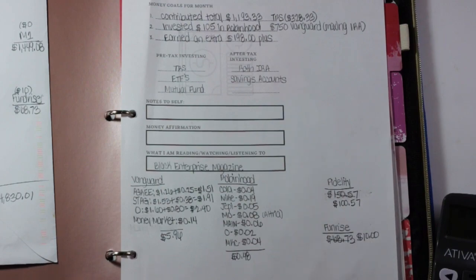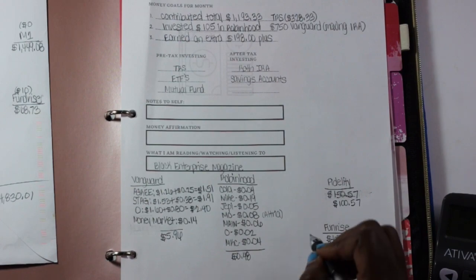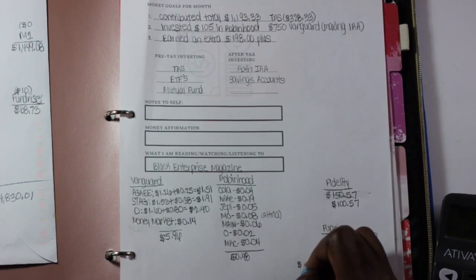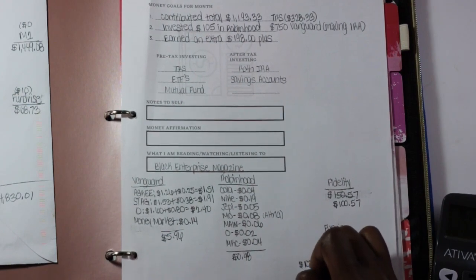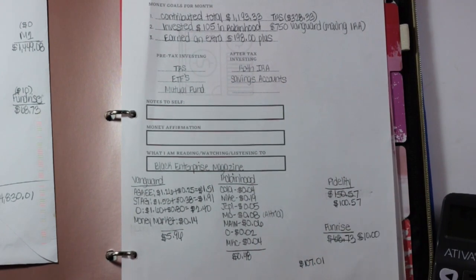So total, we're going to do $5.96 plus $0.48 plus $100.57, equals $107.01. That is how I did for the month of July as far as dividends.